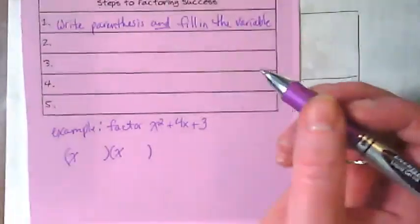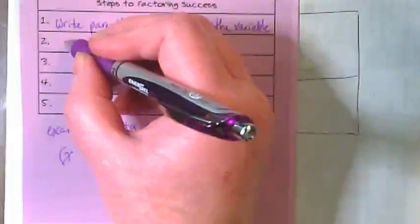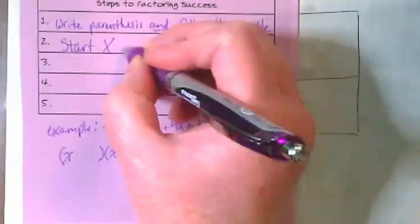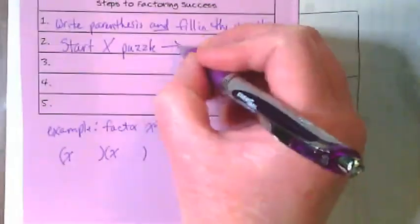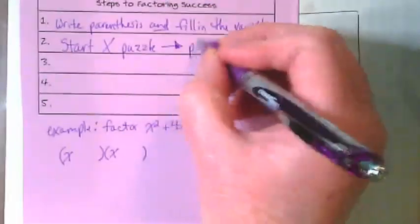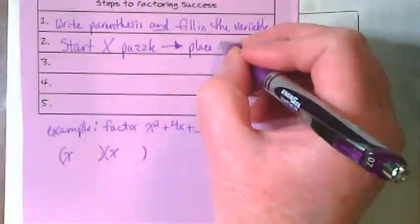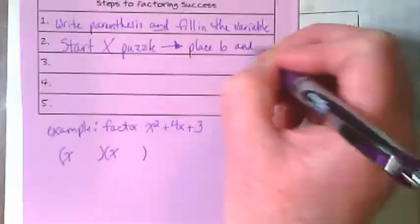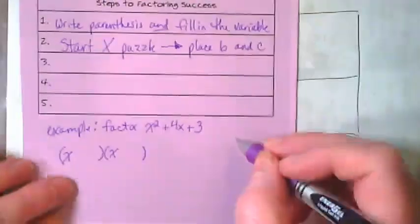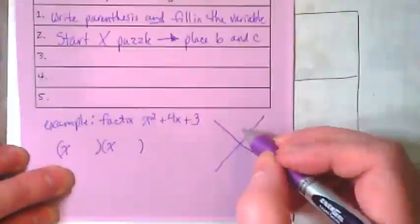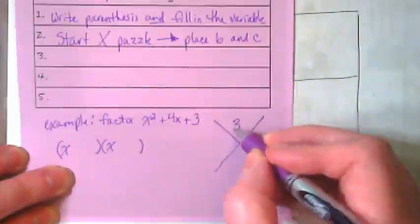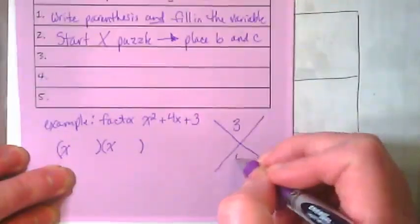Our step two, we're going to start our x puzzle, and to start it we're going to place the b and the c. In this case our c is 3 and our b is 4.